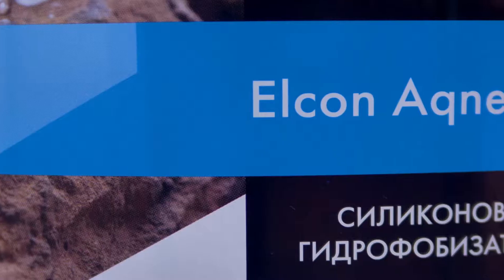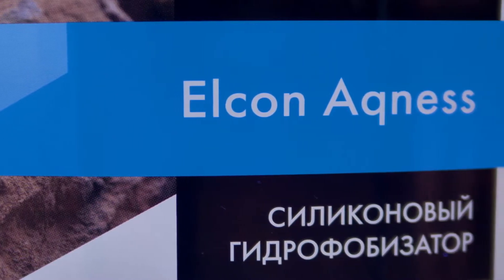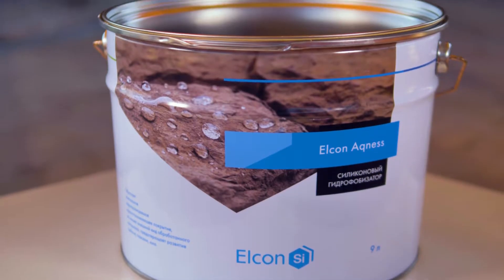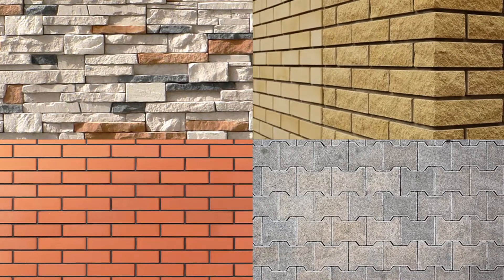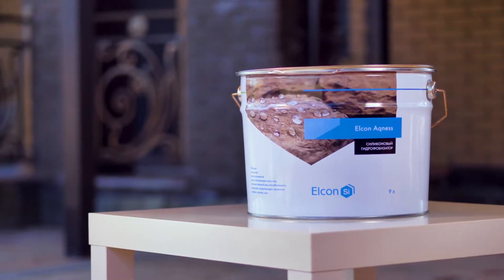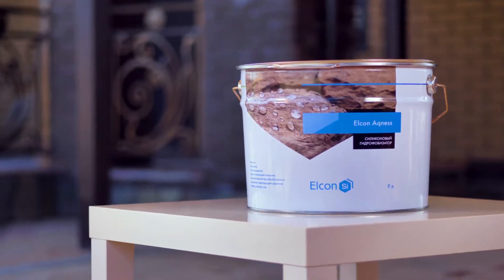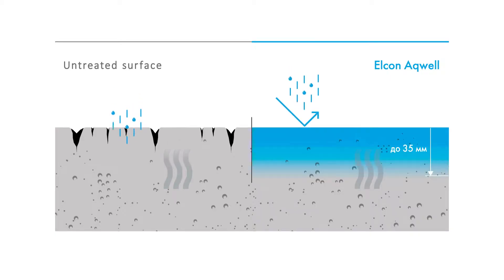Silicone impregnation Elcone Aqnes is used to protect mineral materials, natural stone, facing brick, and concrete from moisture. The impregnation doesn't change the appearance of the treated material and prevents salt efflorescence.